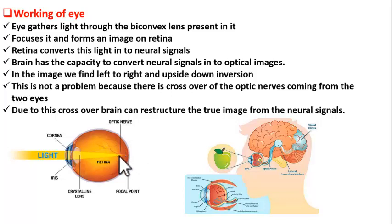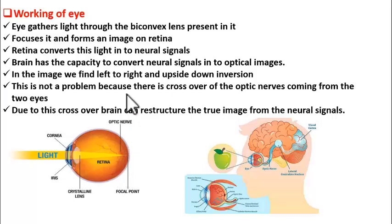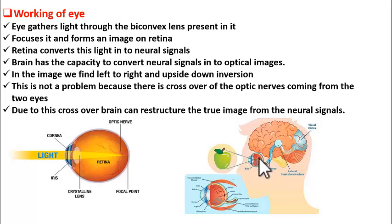You already know from physics that after passing through a convex lens the image formed is always inverted. It is also left-to-right inverted — so both left-to-right inversion and upside-down inversion occur. For example, the image of an apple is upside down and it is laterally inverted. Such an image is formed on the retina.